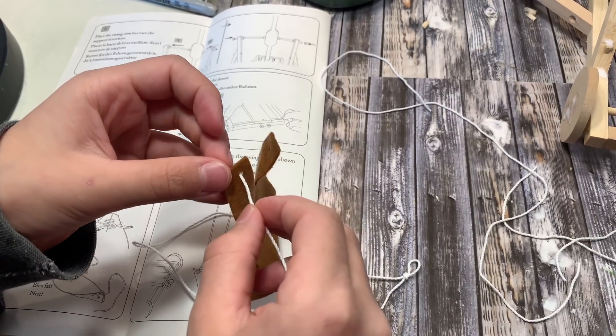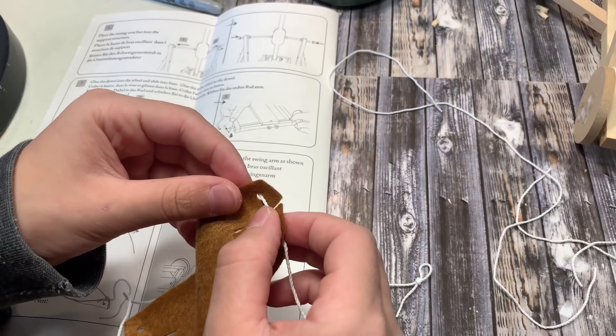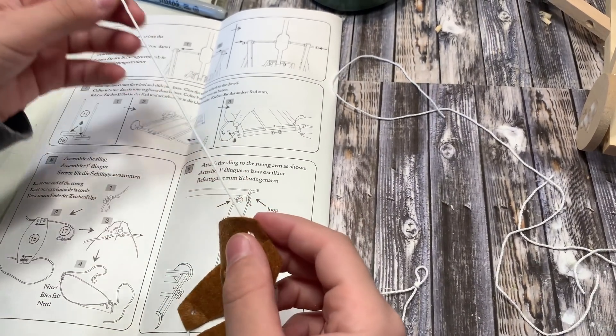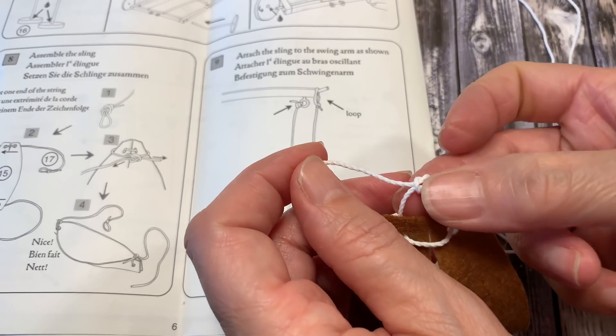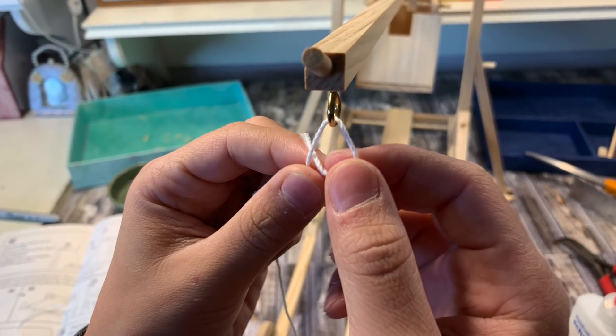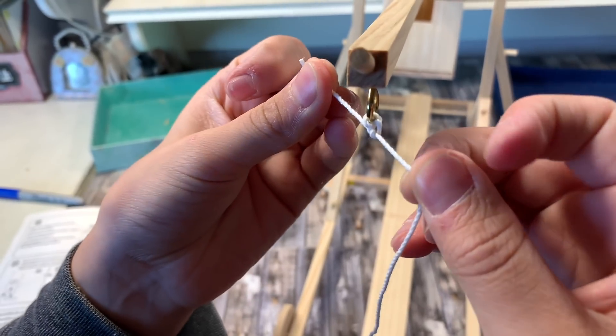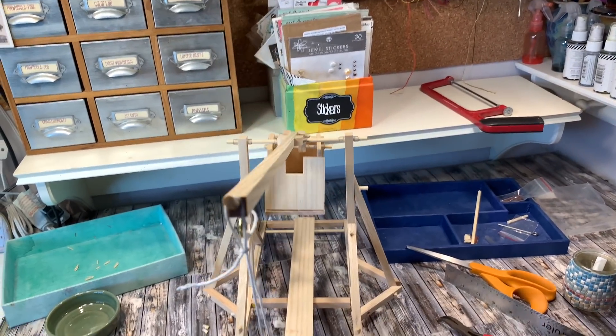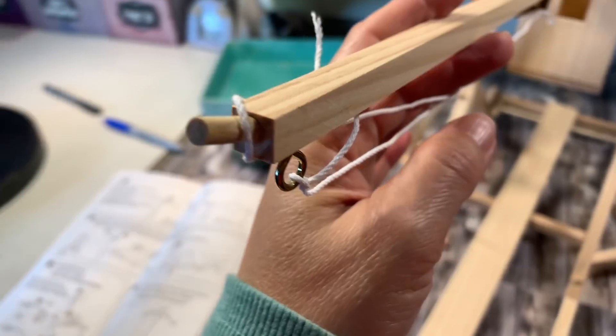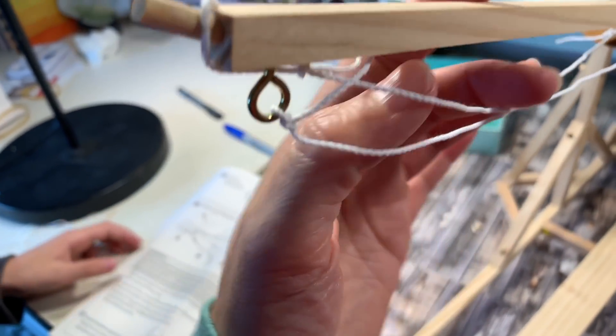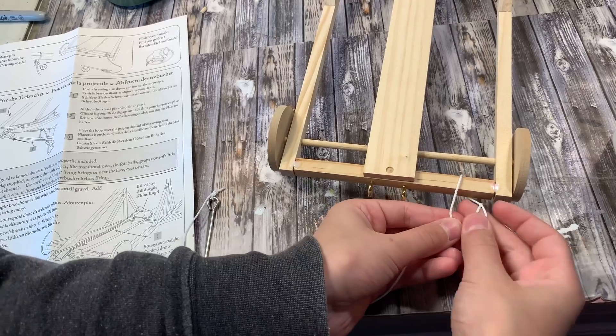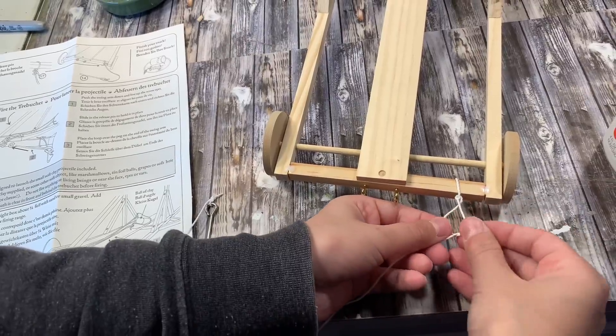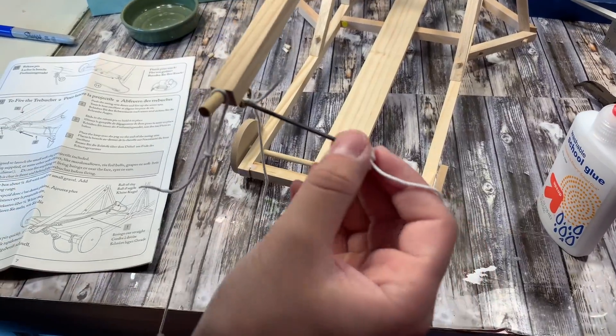Okay, so we're just at the end of the project at this point, and it's time to just string up the part that holds the rock or whatever projectile you're going to have. Now the kit does come with some clay in order to make your own projectile, but at the end of this video I'm going to show you what it looks like using the clay ball as well as a rock.